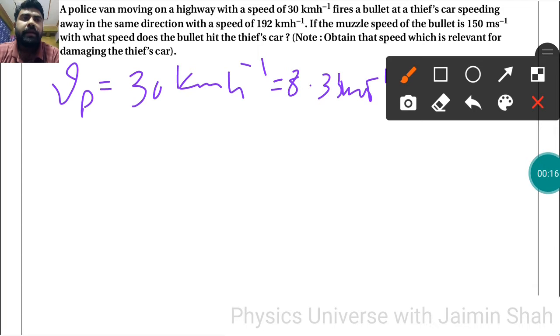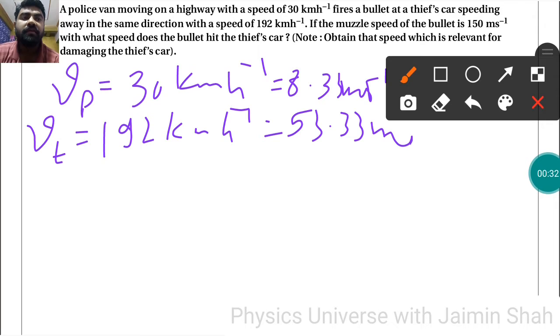The van fires a bullet at a thief's car speeding away in the same direction with speed VT equal to 192 kilometers per hour, that is 53.33 meters per second.